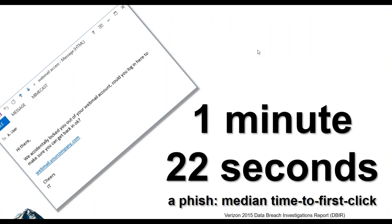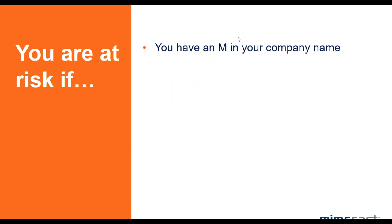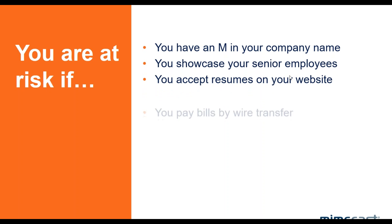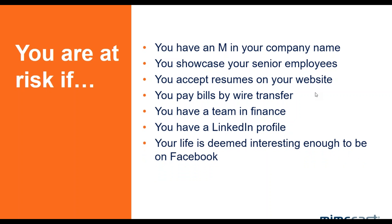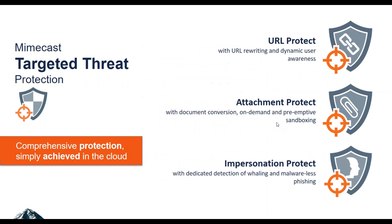Phishing security attacks have a very short time to get you — roughly 1 minute 22 seconds, according to Verizon Breach data. You are at risk if you have an M in your company name, because bad guys can substitute Ns. If you put senior employees on your websites, accept resumes, pay bills by wire transfer, have a team in finance, or have a LinkedIn or Facebook profile, all these are attack vectors. Security is a real high-profile issue. I recently taught security for the IRS and visited the dark web, showing how identity theft happens. All businesses of all sizes are vulnerable. The bad actors are going after accounting firms with a vengeance — the primary targets have become accounting firms, law firms, and banks. Banks are in fairly good shape to protect themselves; most accounting firms and law firms are not.